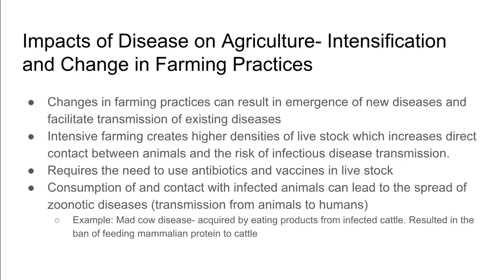The intensification of farming requires the need to use antibiotics and vaccines within the livestock, and consumption of and contact with any infected animals can lead to the spread of zoonotic diseases. An example of this is mad cow disease, which was acquired by eating products from infected cattle, and this resulted in the ban of feeding any mammalian protein to cattle in the agricultural industry.